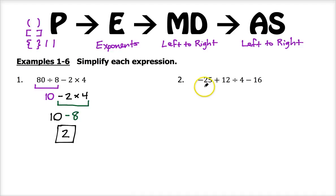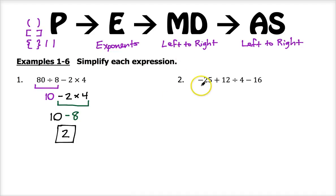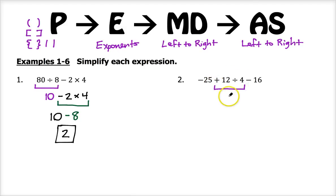Number 2: negative 25 plus 12 divided by 4 minus 16. Again there are no grouping symbols and no exponents, so we jump right to multiplication and division. I see addition first, then I see division, so I'll go ahead and do the division first. This is a positive 12 because of that plus sign in front of it — 12 divided by 4 is positive 3. So we bring down a positive 3, and negative 25 and minus 16 also come down.